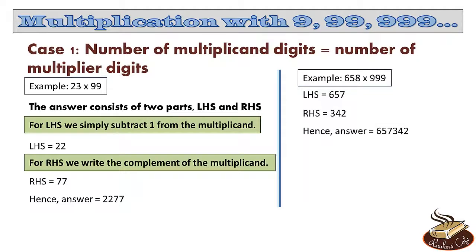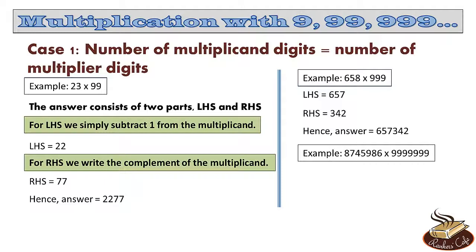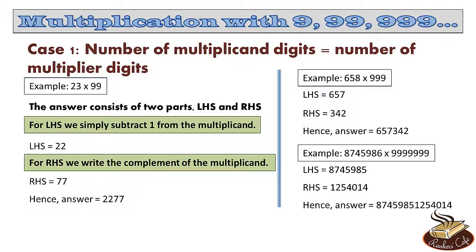Now let's take a scary looking number. Something like 8745986 into 9999999, that is 9 is repeated 7 times. Now the only thing to note here is that the number of multiplicand digits should be equal to the number of multiplier digits. Only in that case we can apply our formula. Now again, finding LHS is very easy. We simply subtract 1 from the multiplicand. So the LHS is 8745985. And the RHS is the complement of 8745986. The complement of this number is obviously 1254014. So the answer is 8745985 1254014.